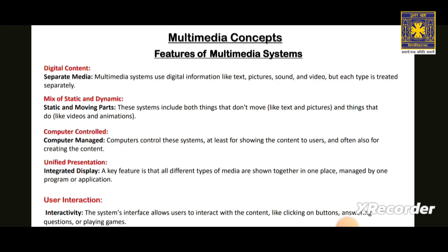Another main feature of a Multimedia system is the mix of static and dynamic elements. This means the system includes both things that don't move, like text and pictures, and things that do move, like videos and animations.